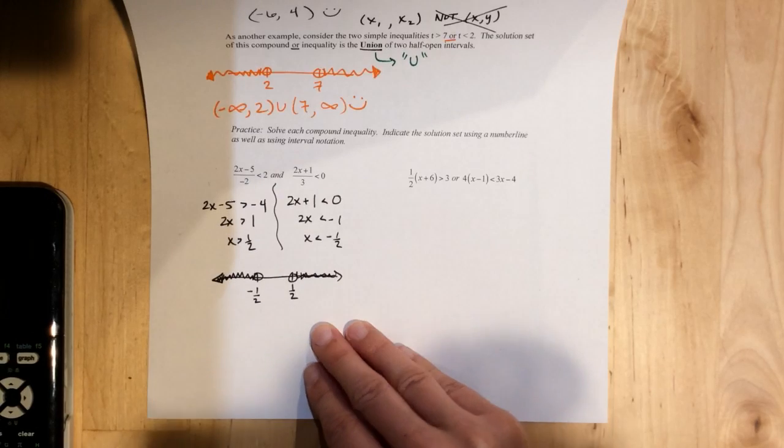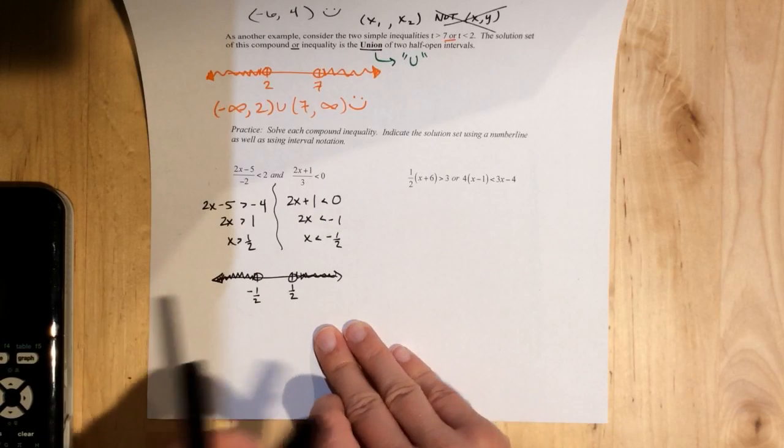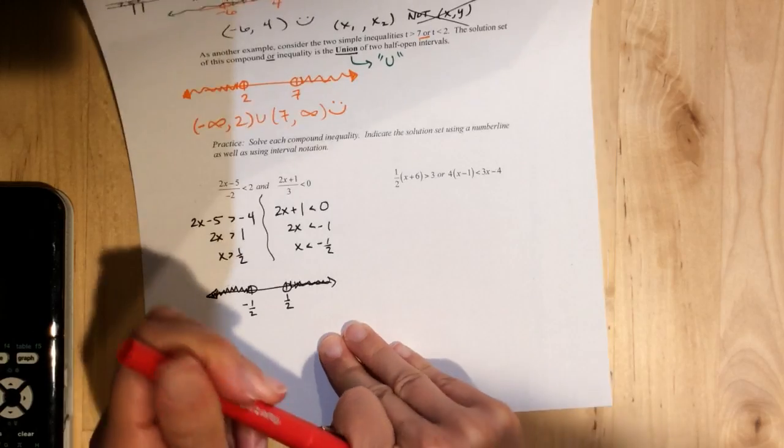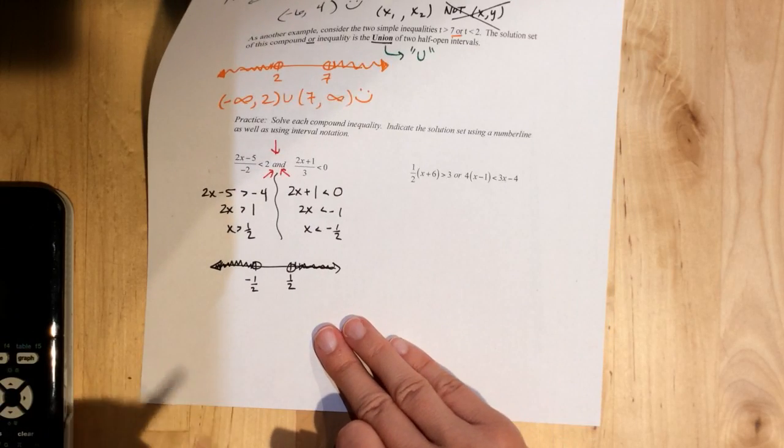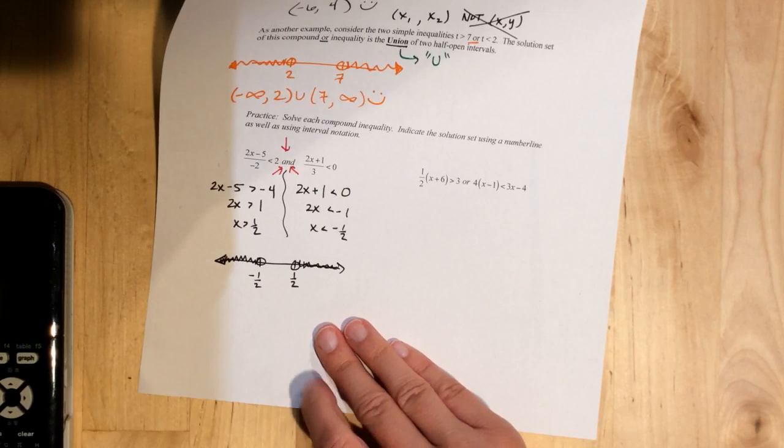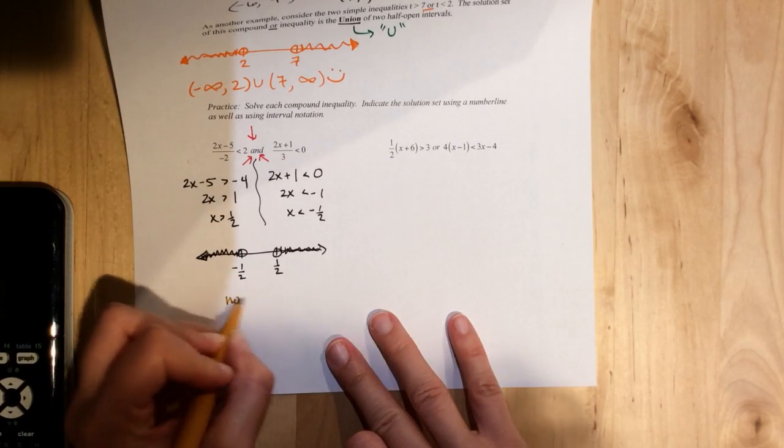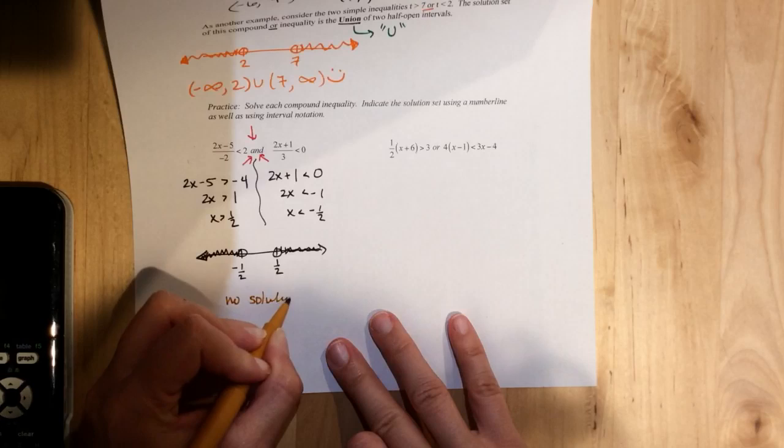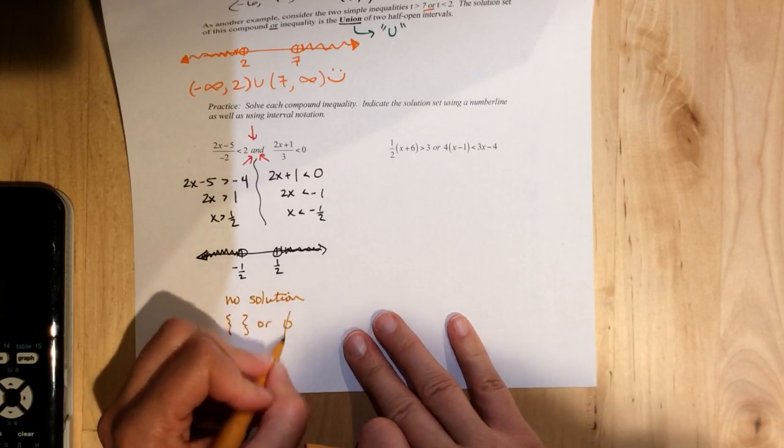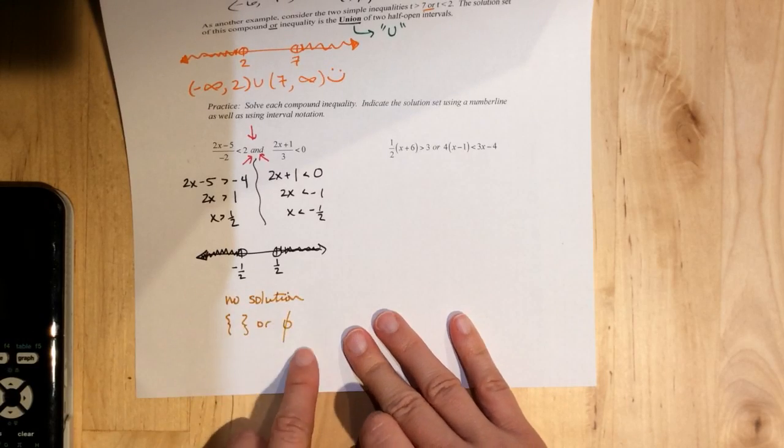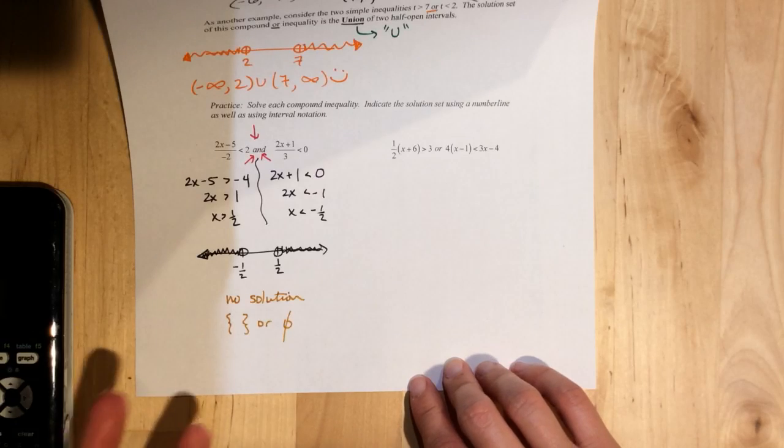And now, here's the most important part. We have to interpret the results. Remember, this was an and question. That means intersection. Is there any intersection? Is there any overlap? No. So what's the answer? No solution. And remember, how you write that is either with the empty set or the zero with the line through it, which stands for empty set. Hopefully, that wasn't too bad.